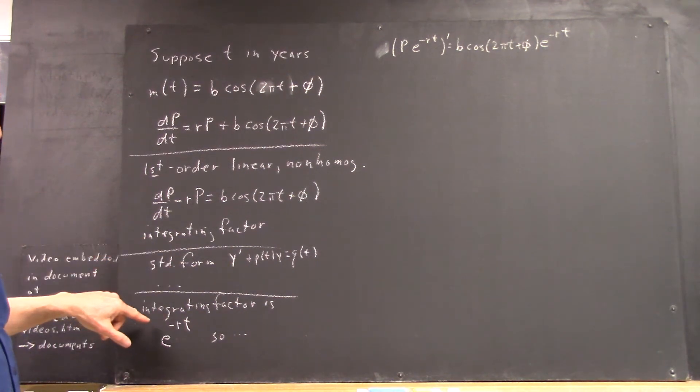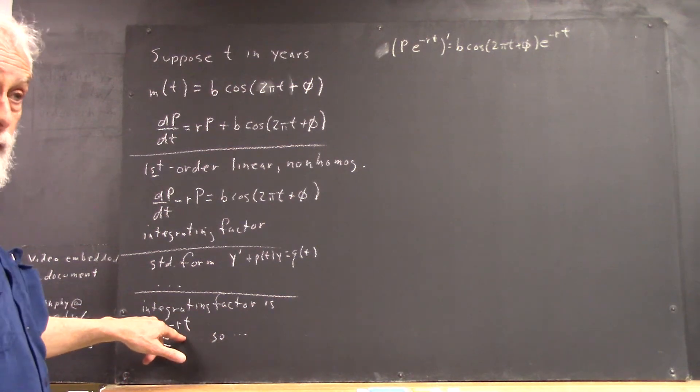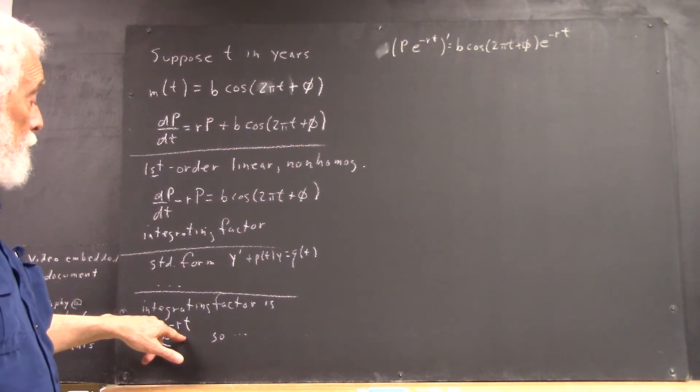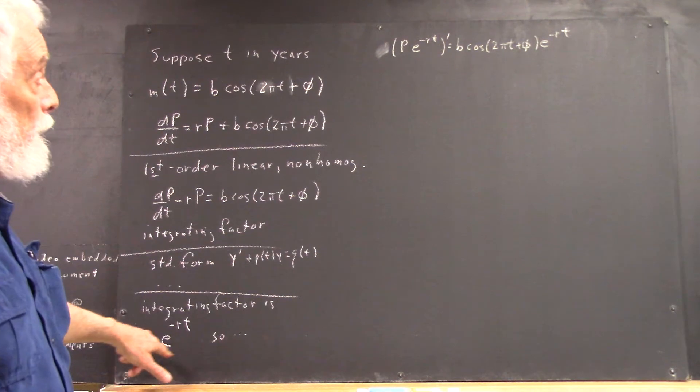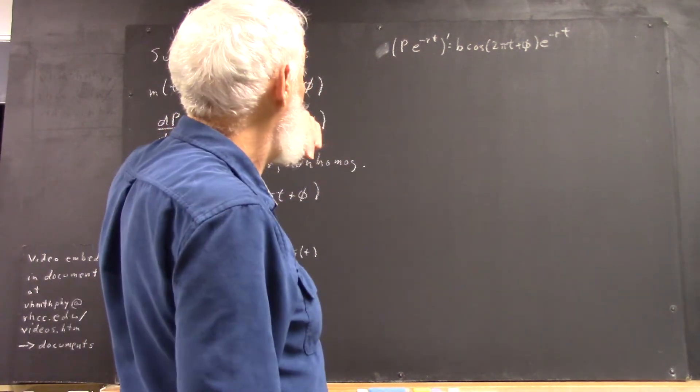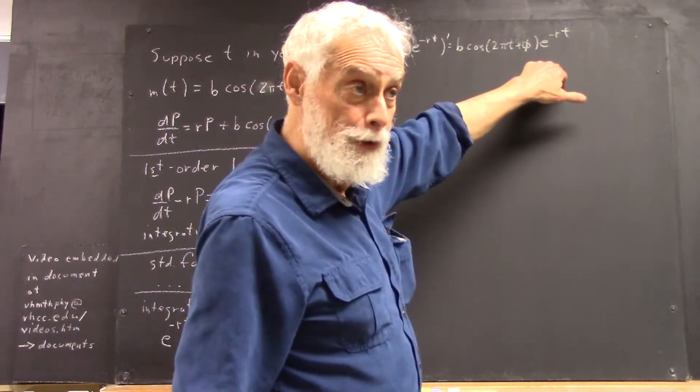And why is then the integrating factor e to the negative rt? And how does that then give you this? And then what do you do with this?